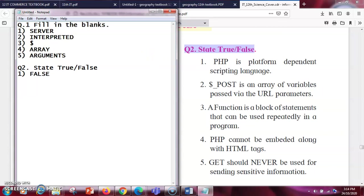Next, dollar underscore POST is an array of variables passed via the URL parameters. So this is false. Dollar underscore GET is the right answer for URL parameters, not POST. So this is false.